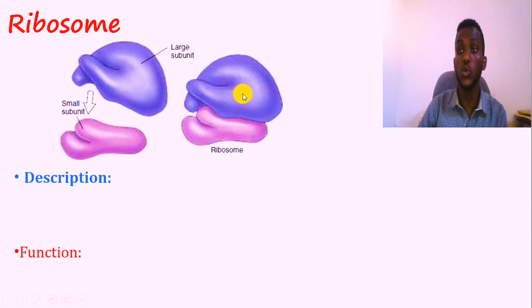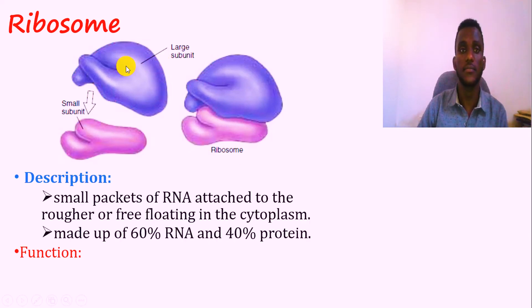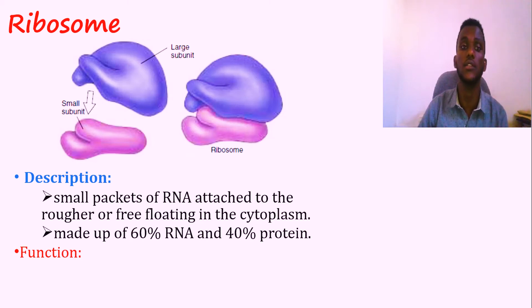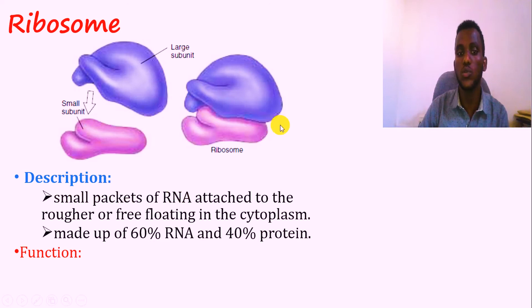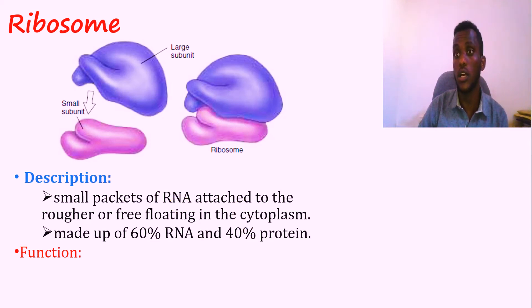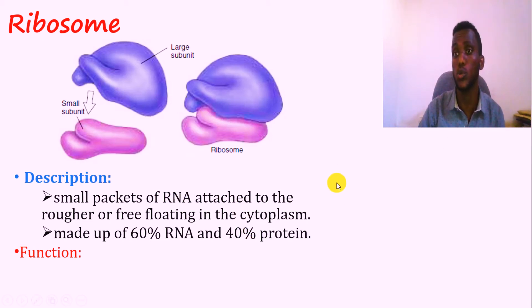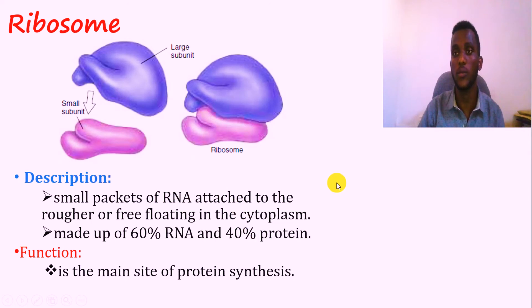The other organelle is the ribosome. The ribosome has a large unit and a small unit. In eukaryotic cells — both plant and animal — the ribosome large unit is 60S and the small unit is 40S, combining to form the 80S ribosome. It consists of RNA and protein. Ribosomes are found freely floating in the cytoplasm or attached to it. The major function of the ribosome is protein synthesis.